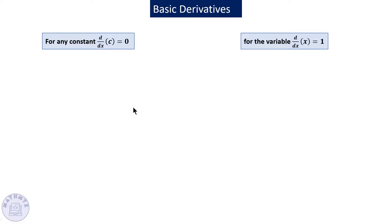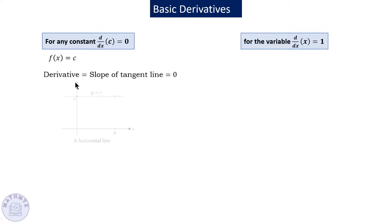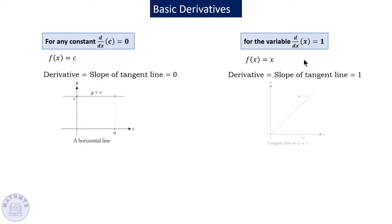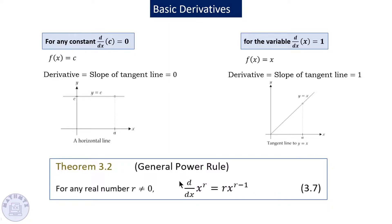These are the basic derivatives: the derivative of a constant is zero, and the derivative of x is 1. The reason behind this is a visual proof — the derivative is the slope of the tangent line. A horizontal line always has a derivative of zero, and for f(x) = x, the slope is 1.